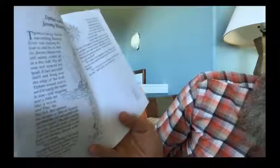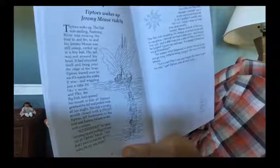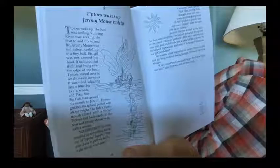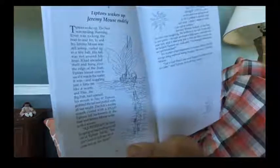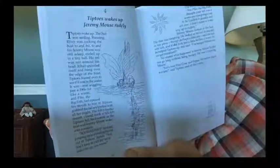His tail was not around his head. It had uncurled itself and hung over the edge of the boat. Tiptoes leaned over to see if it was in the water. It was, and wiggling just a little bit like a worm. And Pike, the big fish, had opened his mouth to bite it. Tiptoes grabbed the tail and pulled with all her might. The fish's toothy mouth closed with a snap. Tiptoes fell backwards in the boat, and Jeremy Mouse woke with a scream. Squeak, he cried, jumping up and pulling his tail out of Tiptoes' hands. You don't have to pull my tail to wake me up, you know.